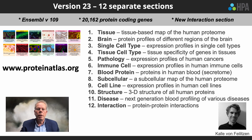Version 23 contains 12 separate sections. We are using a new genome assembly, version 109 of Ensembl, which means that we are covering 20,162 protein-coded genes. We also have a new interaction section, which I will come back to a little bit later.